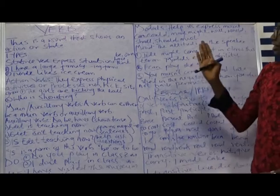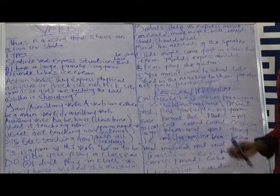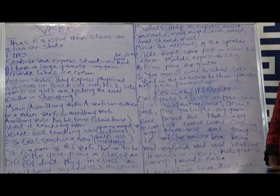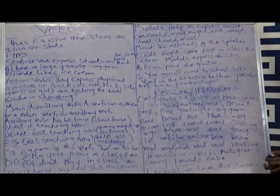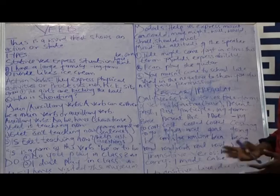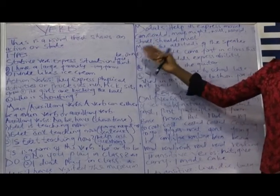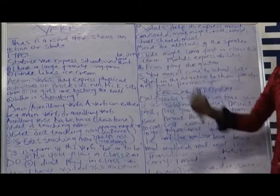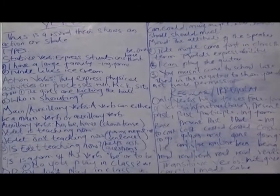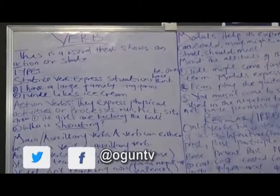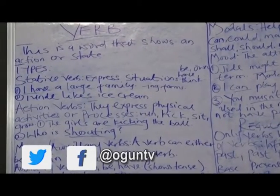So, we have the types of verbs. We have the stative verb. This type of verb expresses situations or a state of being. Examples of this type of verb: be, own, have, and think. This type of verb cannot be used in the continuous tense.